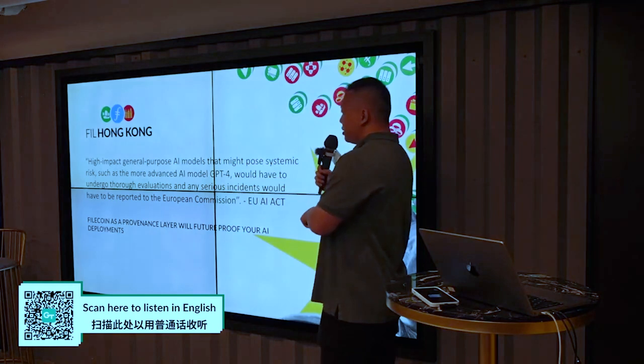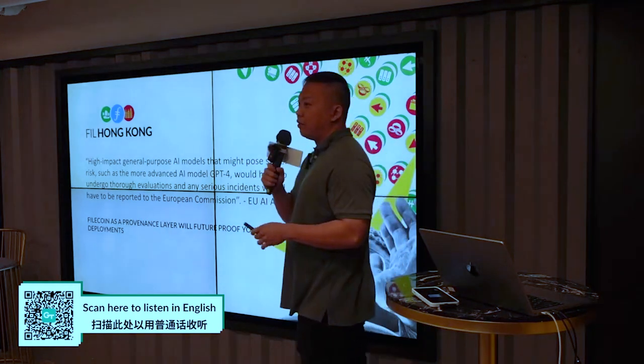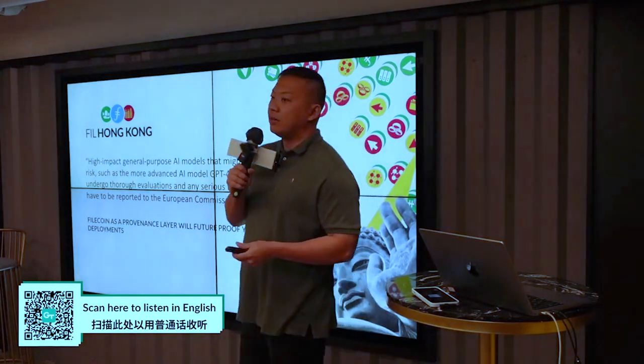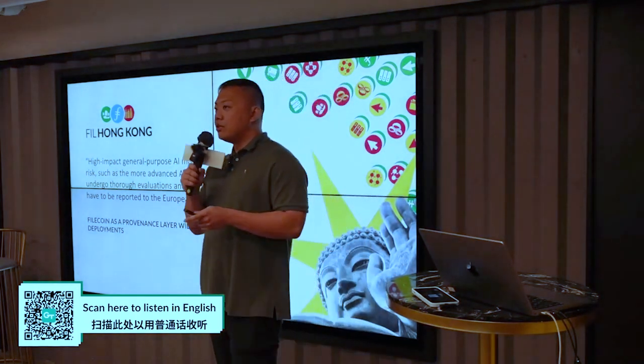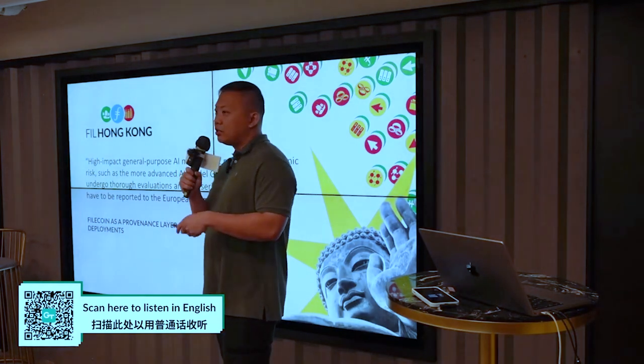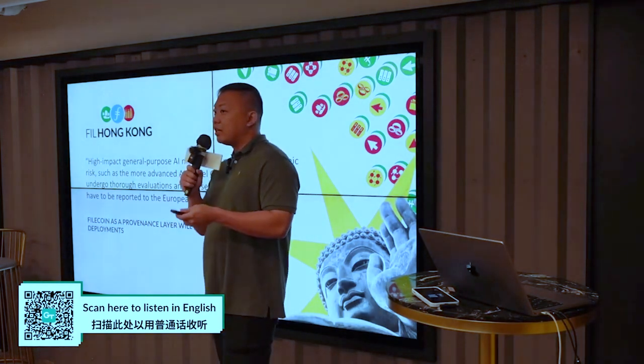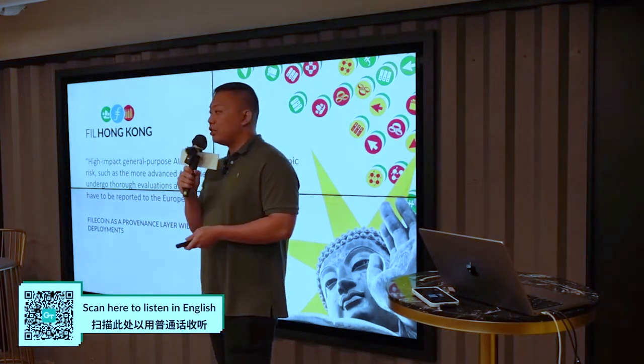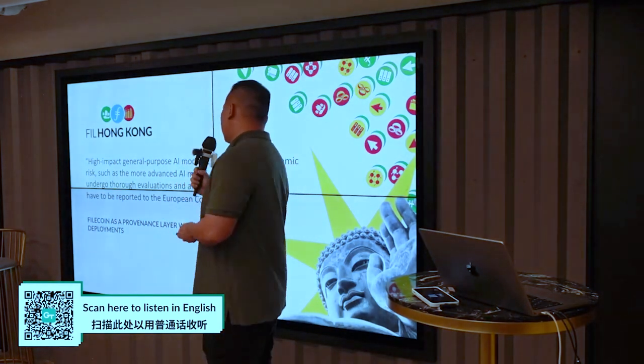Filecoin itself can act as a provenance layer, because once you store data onto Filecoin, it's immutable. At least you can prove that the data has not been changed in any way.